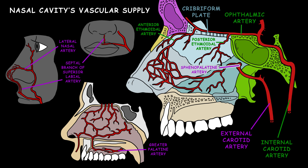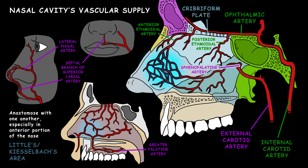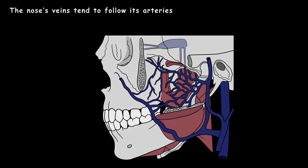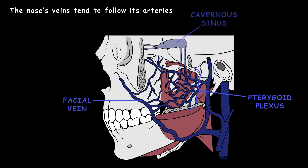These arteries anastomose with one another, especially in the anterior portion of the nose. This spot is called Little's area, or Kiesselbach's area. The nose's veins tend to follow arteries. They drain into the pterygoid plexus, facial vein, and cavernous sinus.